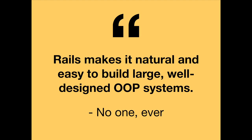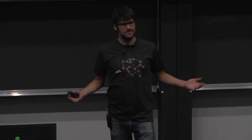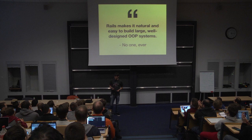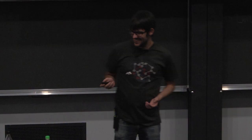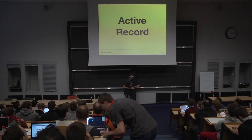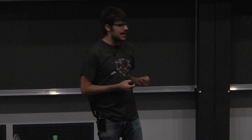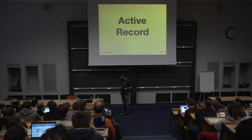I'd like to begin with a quote. Rails makes it natural and easy to build large, well-designed, object-oriented systems. Does anybody know who said that? So I want to look at why that is. I think in that quote, the context for Rails is really mostly referring to Active Record.